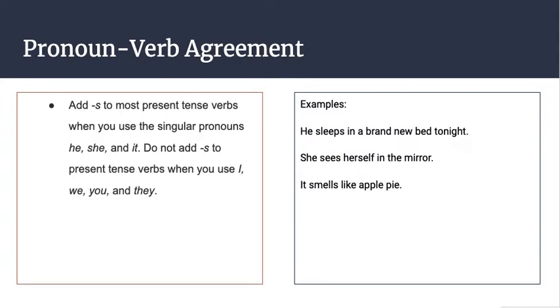In pronoun and verb agreement, what we're really looking at is whether or not we add -s to the verb to make it make sense with the pronoun that's in the sentence. Remember, a pronoun is just a word that we use to replace the actual name of something so that it doesn't sound like we're constantly repeating the word over and over again. We add -s to most present tense verbs when you use singular pronouns such as he, she, and it.